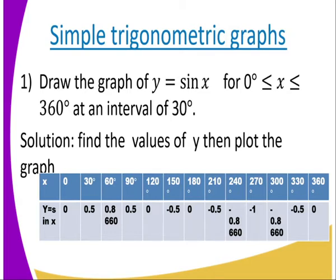From there now, you just get the sin of 0, sin of 30, sin of 60 until you get to 360. As you can be able to see, the values are there.